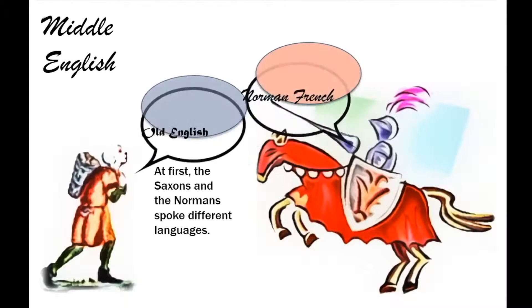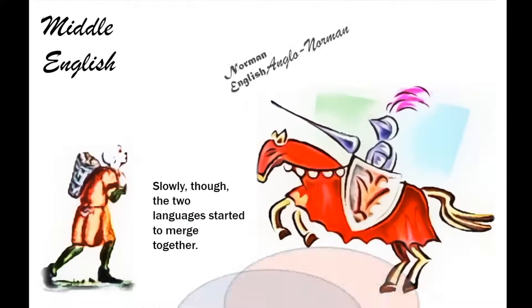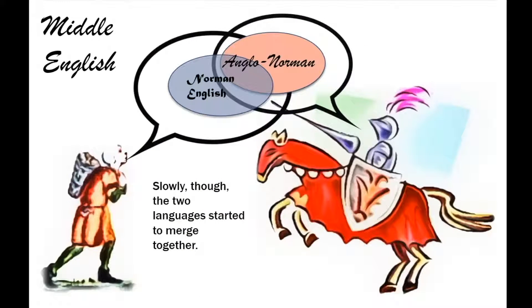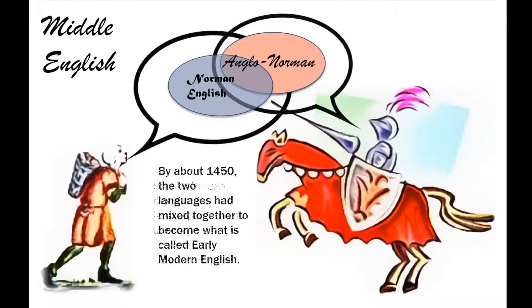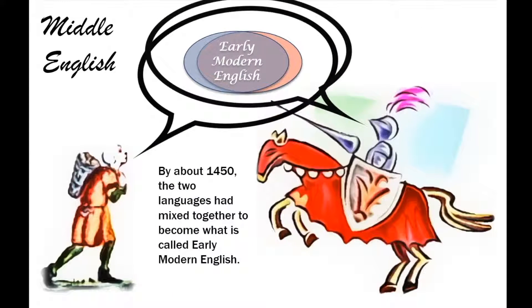At first, these were two different languages: Old English and Norman French. Slowly, though, they started to mix. Old English, the language of the Anglo-Saxons, developed under Norman influence into something we call Norman English, and the French of the Normans slowly developed into something called Anglo-Norman, until by about the middle of the 15th century the two languages had mixed together to the extent that they formed a single language known as Early Modern English.